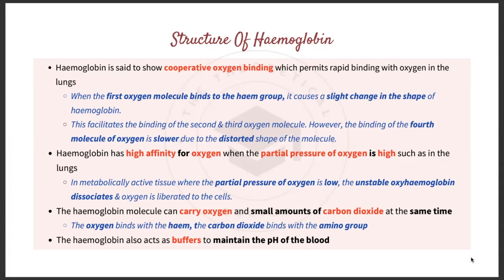Hemoglobin shows cooperative oxygen binding, which permits rapid binding with oxygen in the lungs. When the first oxygen molecule binds to the heme group, it causes a slight distortion in the shape of hemoglobin, facilitating the binding of the second and third oxygen molecules. However, binding of the fourth molecule is slightly slower due to the distorted shape — this can be seen later in the dissociation curve graph.